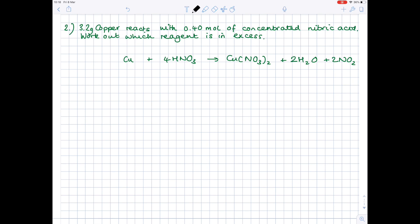So question 2. 3.2 grams of copper reacts with 0.4 moles of concentrated nitric acid. Work out which reagent is in excess. And happily here, we've been given our balanced symbol equation. Notice that we're looking for the reagent in excess, so the plentiful one, as opposed to the limiting one. But don't worry, the method is still the same. So let's start by doing our table.